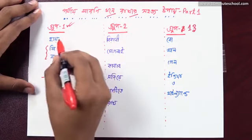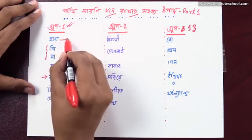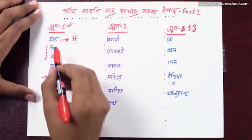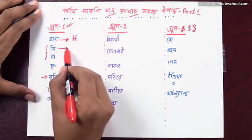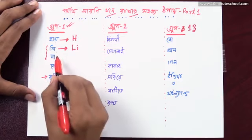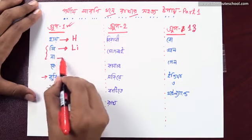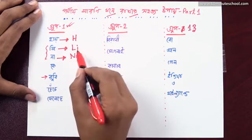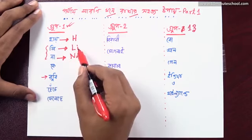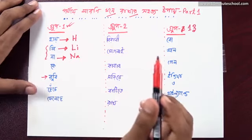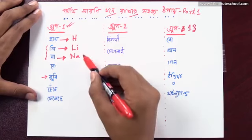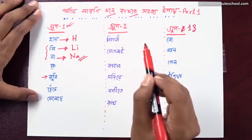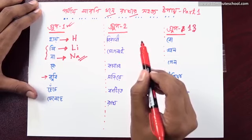The first one is hydrogen. Li is lithium and sodium. The only thing is lithium and sodium. The sodium is called Natrium — Na is called Natrium.